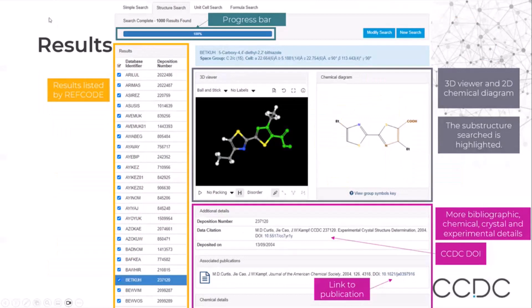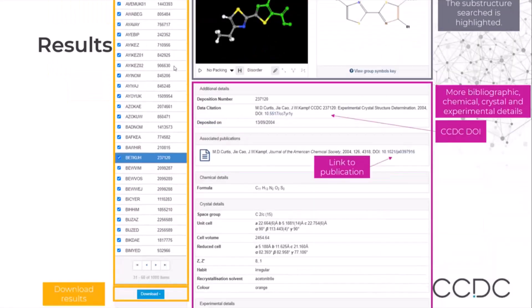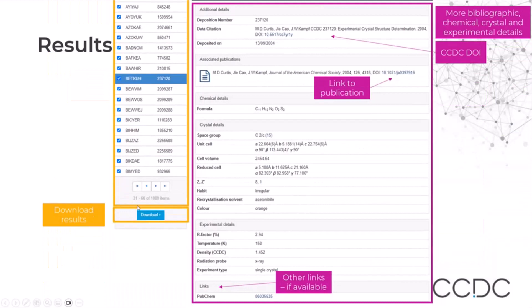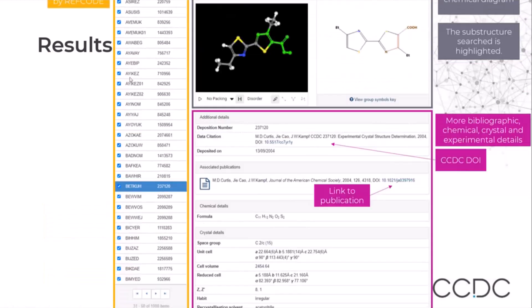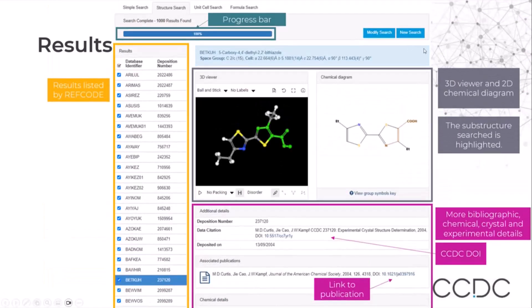This will bring you to the results view with a progress bar at the top. The results are listed on the left-hand side by refcode. If you scroll down, you will see that you can download the results. Scrolling back up, you will see at the center on the right-hand side the 3D viewer and the 2D diagram.